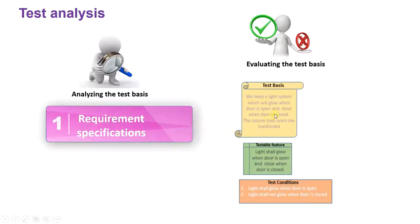We read the test basis, identify the testable features, then finally land on the test conditions. We have already covered this, so I am not explaining it again.